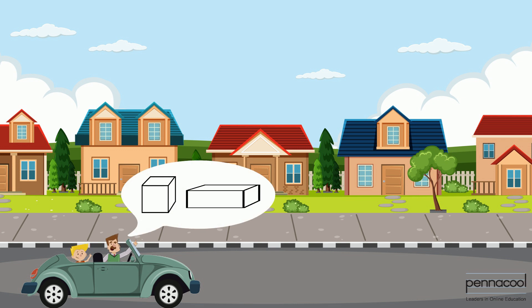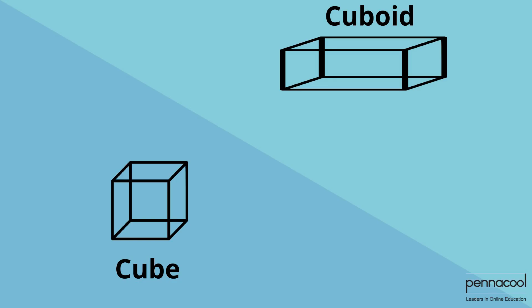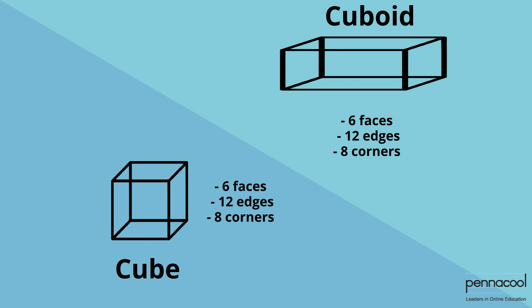His dad asks which solid has more faces between a cube and cuboid. Jadon thinks for a minute and says he thinks the cuboid has more faces. His dad explains that cubes and cuboids have almost the same characteristics — they both have six faces, twelve edges, and eight corners. The only difference is that all the faces on a cube are identical and all the edges of a cube have the same length.